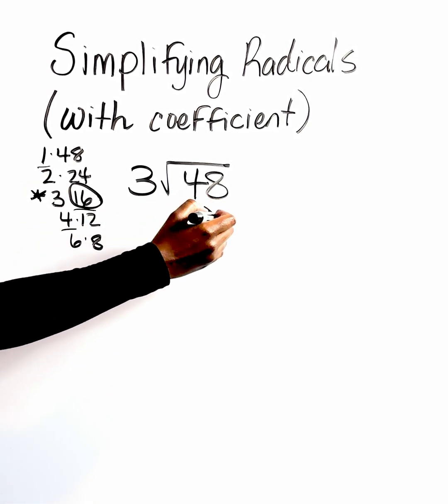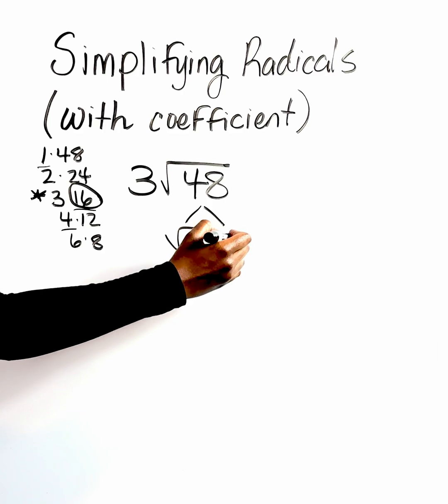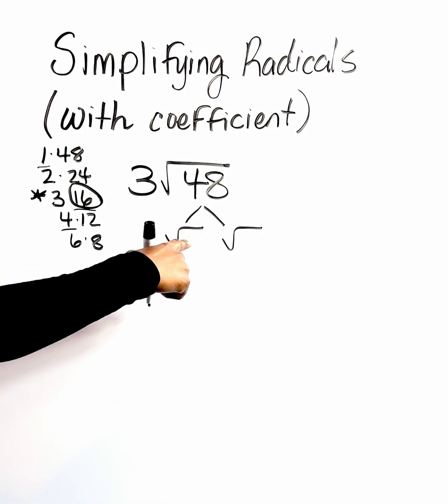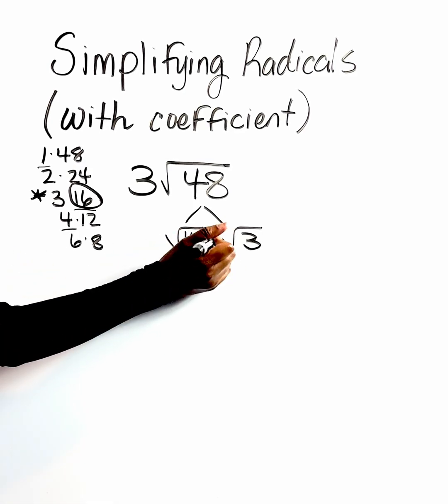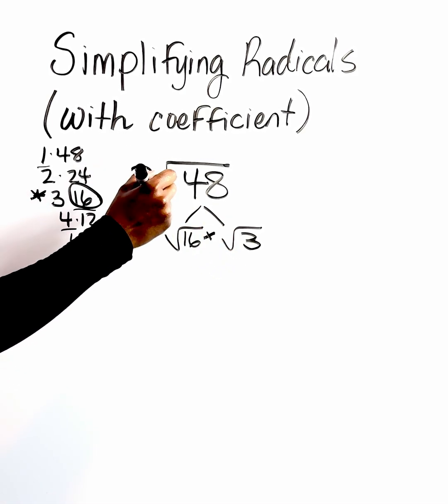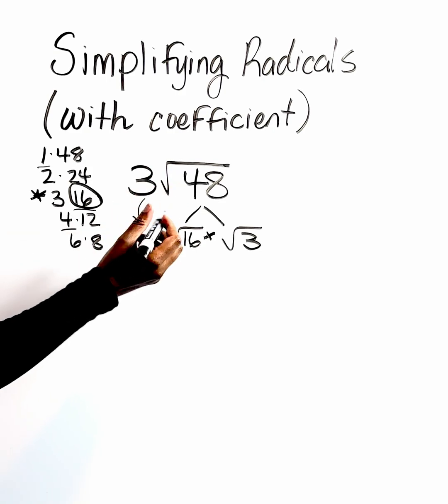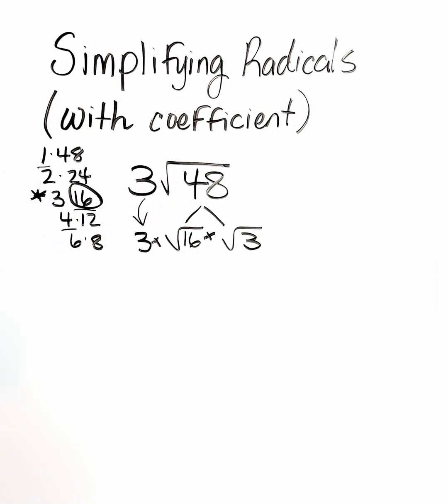We're always going to put our perfect square first. So sixteen, three. We're going to rewrite using multiplication. So remember, when we have this number in the front, we have to bring it down. We can't exclude that.